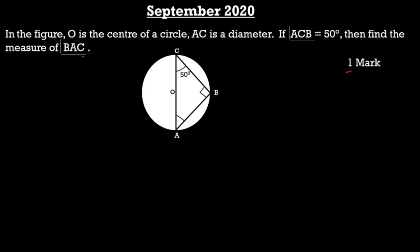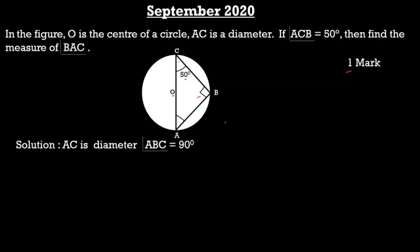Here, O is the center of the circle, AC is a diameter, and angle ACB is equal to 50 degrees. Angle ABC is 90 degrees because A, B, and C are distinct points on a circle where the line AC is a diameter, so angle ABC is a right angle. Therefore, angle ABC is 90 degrees. Now we know ABC is a right-angle triangle at B.